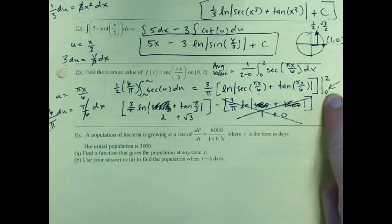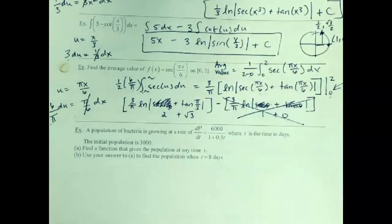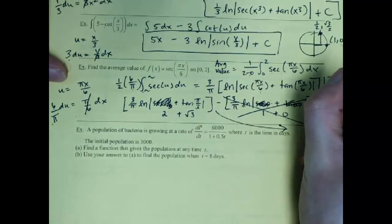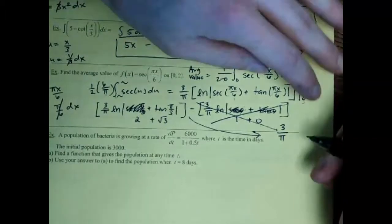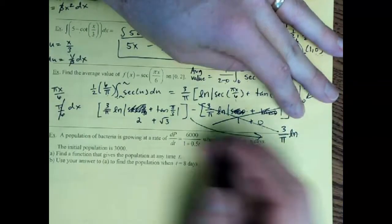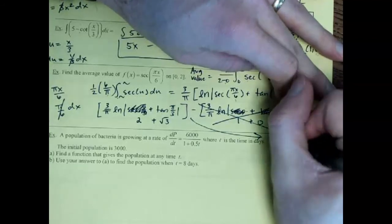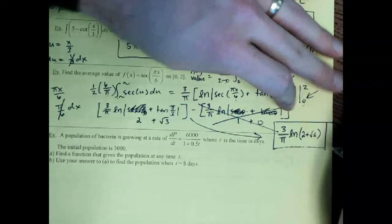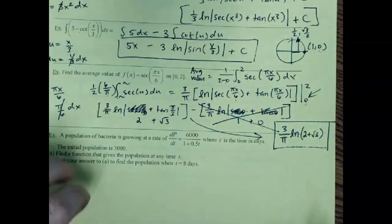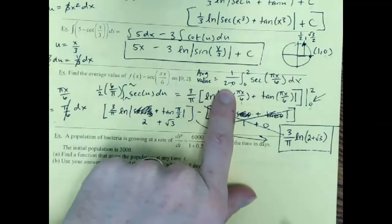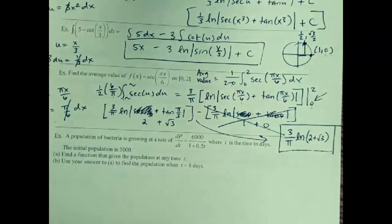The final answer for the average value is (3/π) ln(2 + √3) — quite an ugly answer, but correct. Don't forget to divide by the width (b − a = 2); if you get 6 at the end, you forgot the factor of 1/2. So (1/(b−a)) times the integral was a little nasty, but that's the result.